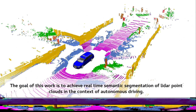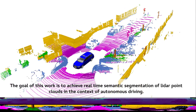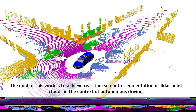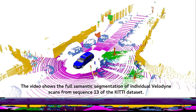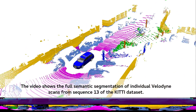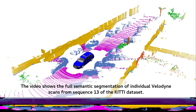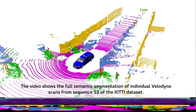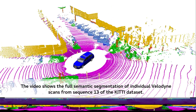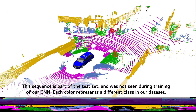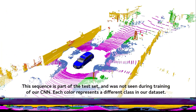The goal of this work is to achieve real-time semantic segmentation of LiDAR point clouds in the context of autonomous driving. The video shows the full semantic segmentation of individual Velodyne scans from sequence 13 of the KITTI dataset. This sequence is part of the test set and was not seen during training of our CNN.